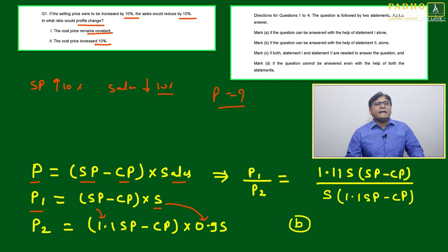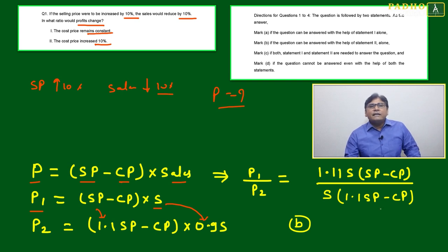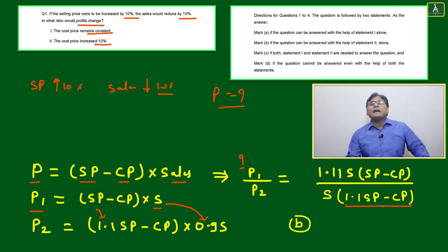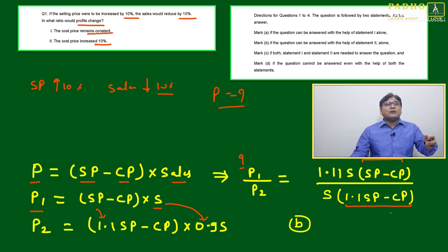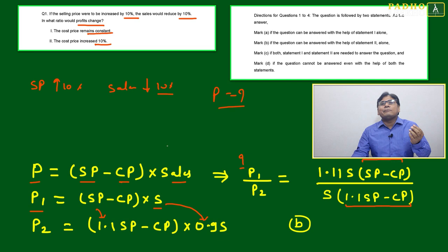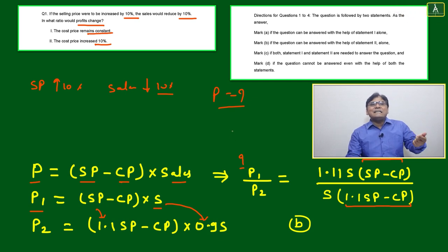We take the ratio P1/P2 to determine the profit change. But in both numerator and denominator, we have variables SP and CP that cannot be cancelled out. For Statement 1, if cost price remains constant, we still cannot compute (1.1·SP − CP) / (SP − CP) because we don't know the exact values of SP or CP. Only percentage changes are given, which is not sufficient. So Statement 1 alone is insufficient.